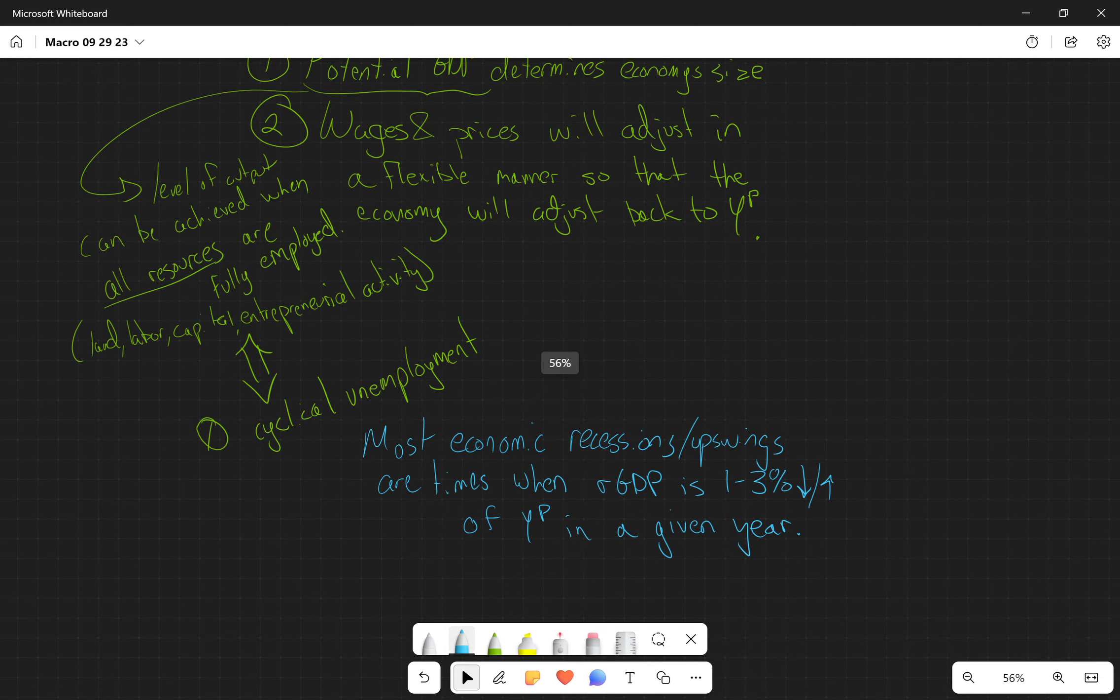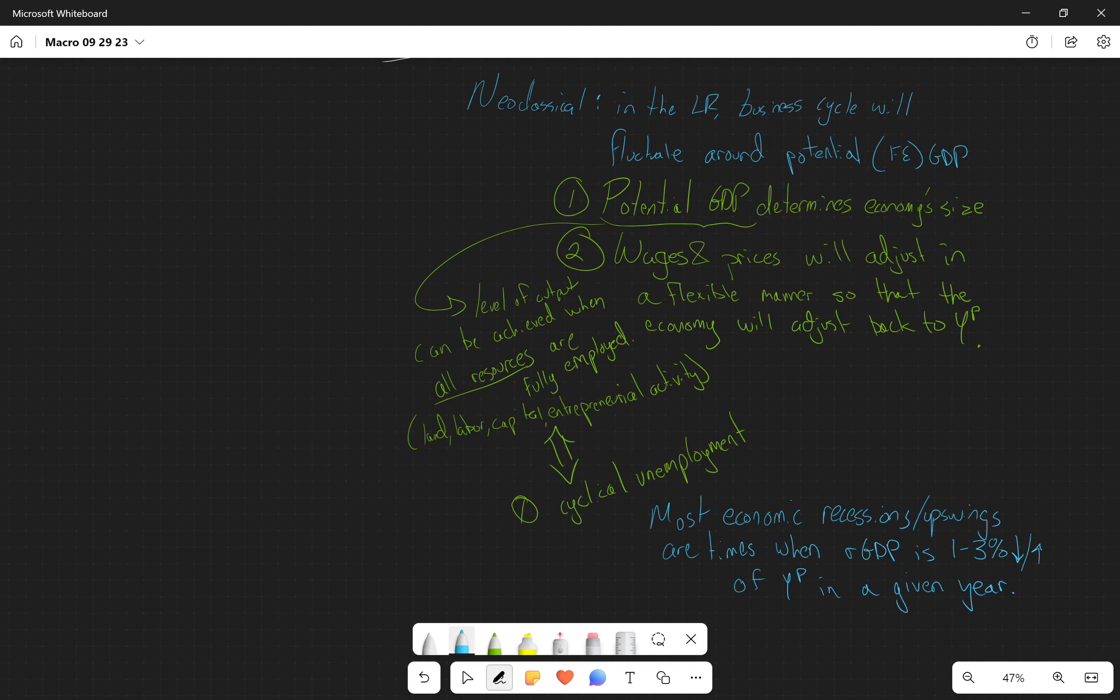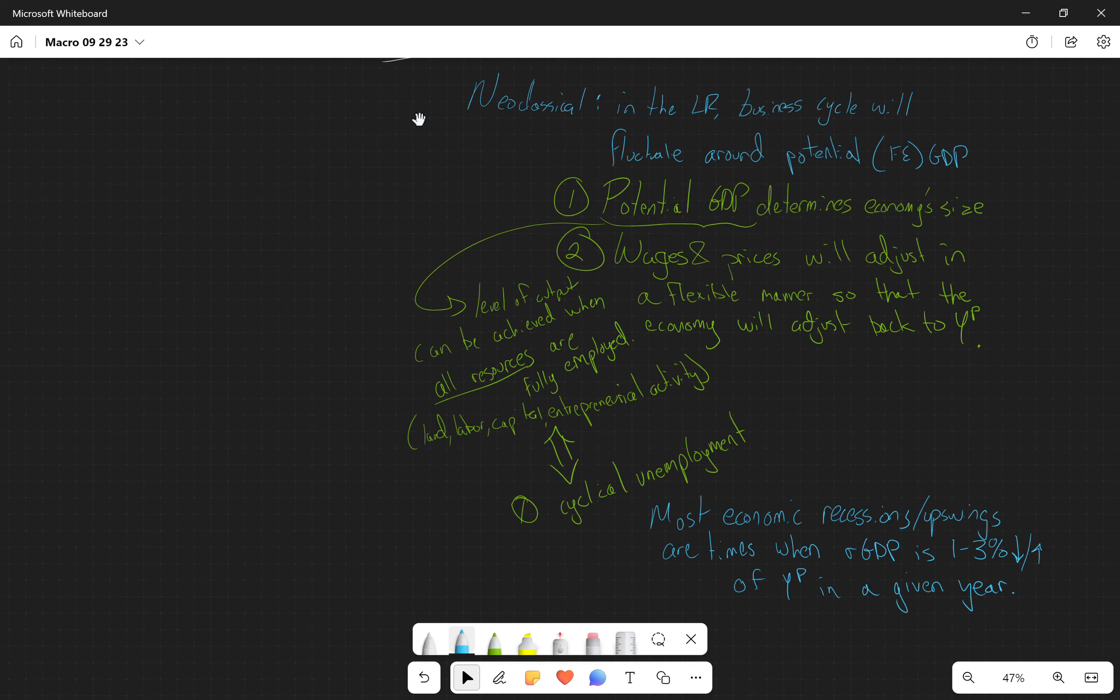So what does all this mean? This means that when we're talking about neoclassical perspectives or neoclassical approaches to things, we're going to be looking at price level on the y-axis, real GDP on the x-axis. And we're going to have a straight up and down long run aggregate supply curve. So this is determining my potential GDP.